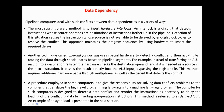Regarding data dependency, the most straightforward method is to insert hardware interlocks. An interlock is a circuit that detects instructions whose source operands are destinations of instructions further up in the pipeline. Detection of this situation causes the instructions whose source is not available to be delayed by N clock cycles to resolve the conflict. This approach maintains the program sequence by using hardware to insert the required delays.